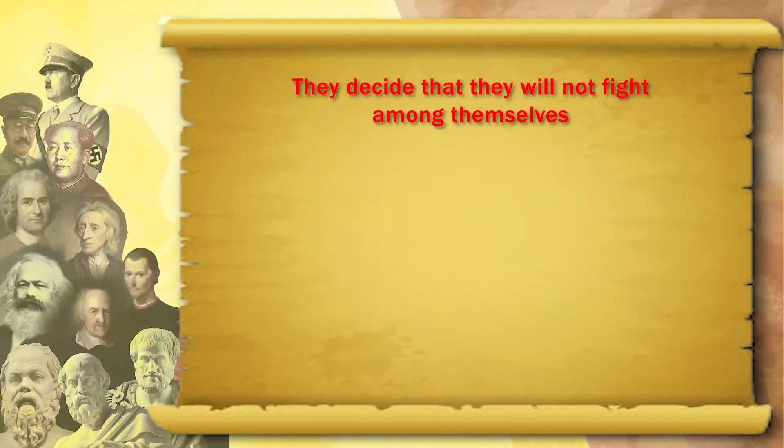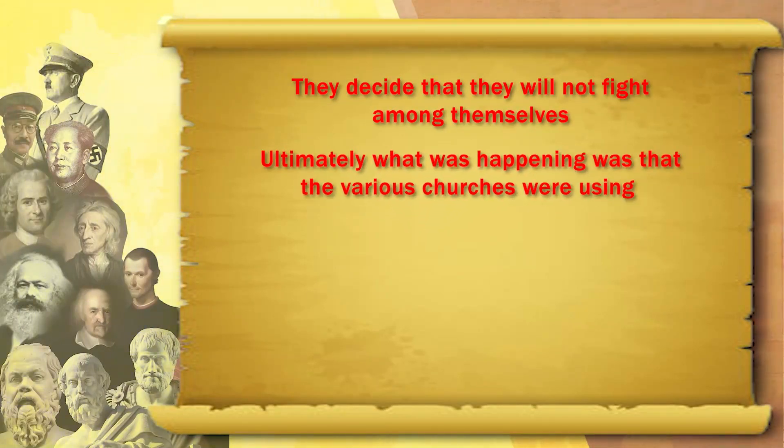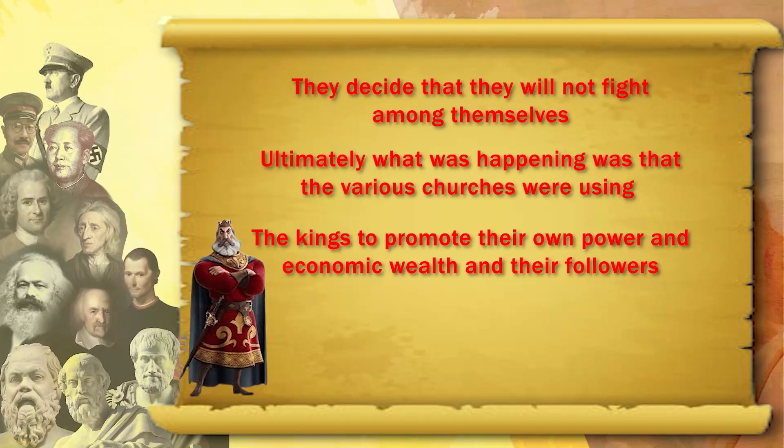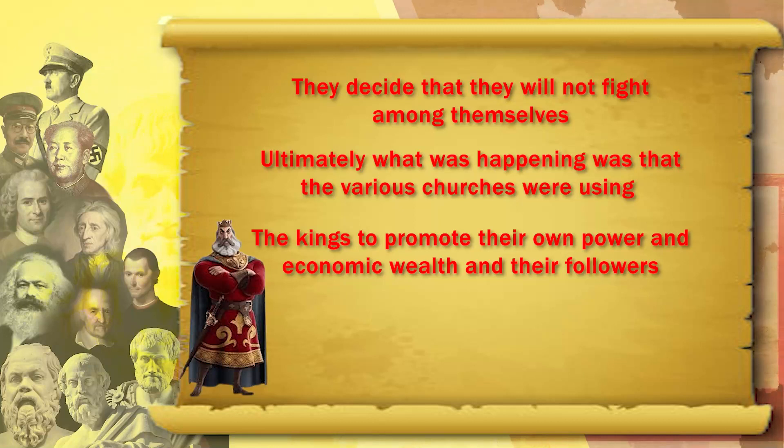In the middle of the 17th century, after the Thirty Years War, there is a Treaty of Westphalia. In the Treaty of Westphalia, all the kings of Europe come together and decide they will not go on fighting amongst themselves, because the various churches are using the kings to promote their own power and economic wealth. After the Treaty of Westphalia in 1648, Europe never undertakes another Catholic-Protestant war.